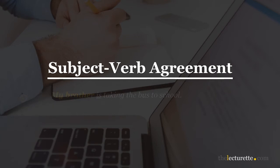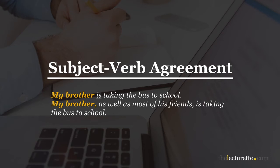In the sentence 'My brother is taking the bus to school,' for example, 'brother' is a singular noun, so the singular verb 'is' needs to be used. However, in the sentence 'My brother as well as most of his friends is taking the bus to school,' it's a lot less clear whether a singular or plural verb needs to be used.